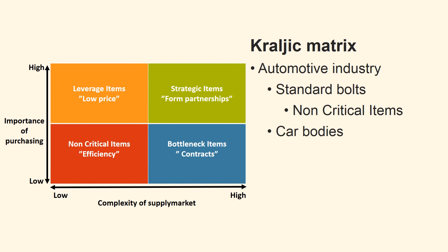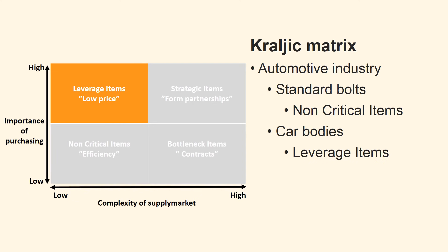The manufacturer buys car bodies of aluminium. They are a big part of the value of the car. Many suppliers can manufacture them. It is a volume item as it represents a high percentage of the profit of the buyer and there are many suppliers available. We need to ensure as low a price as possible and preferably no stock. Therefore, we let our different suppliers bid on large orders for delivery following the just-in-time principle.